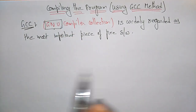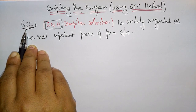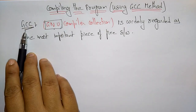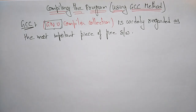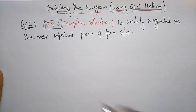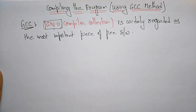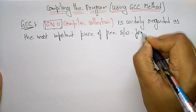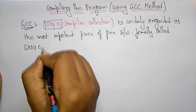GCC is one of the GNU compiler collections. This collection provides various compilers, and GCC is mainly useful for C programming. This compiler is used to compile programs written in C, C++, Java, Fortran, and other programming languages. It was formerly called the GNU C Compiler.